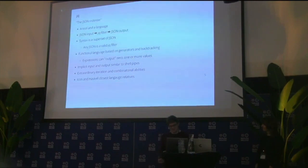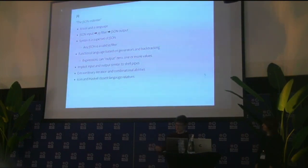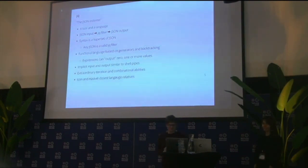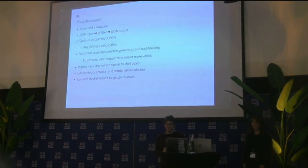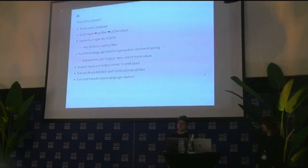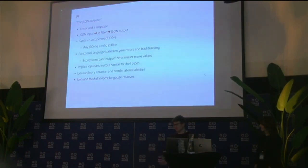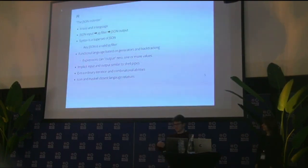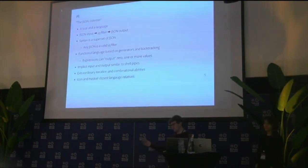JQ is a superset of JSON, so all JSON is valid JQ filters. The strangest thing about JQ is that it's a functional language based on generators and backtracking. It's kind of like Python's `yield` — in JQ you always yield; comma is kind of yield in JQ. Every expression can return zero, one, or more values. It comes from a language called Icon from the eighties.